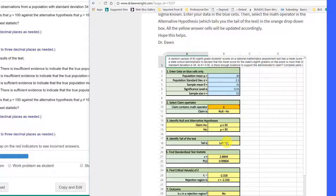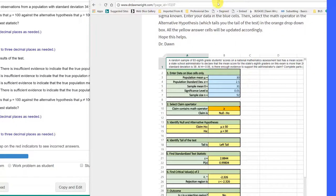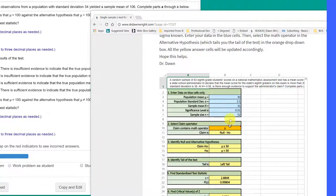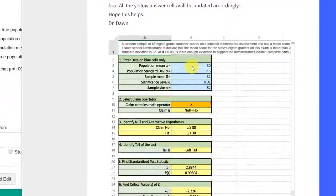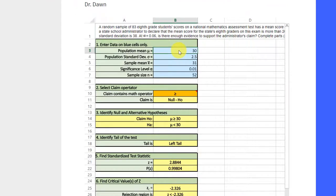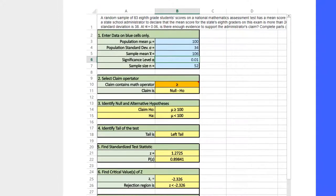The first thing we need is population mean that our null hypothesis mu is equal to 100. The population standard deviation is 34. The sample mean is 106. The significance level is 0.05, and the sample size is 100.